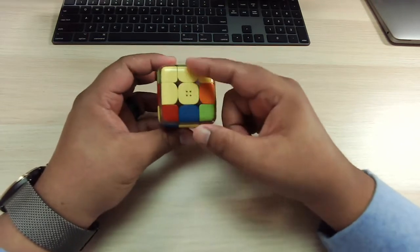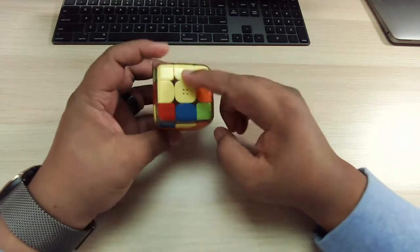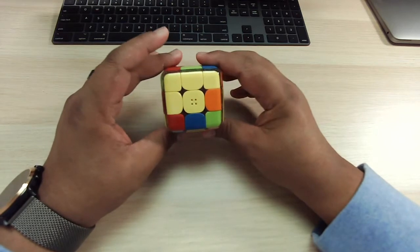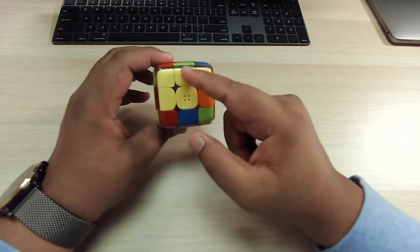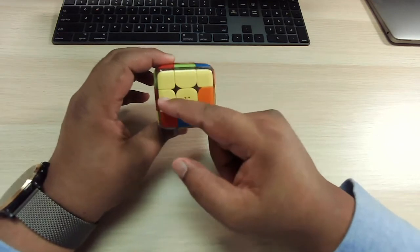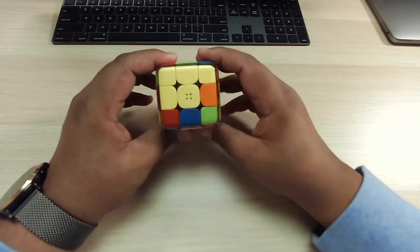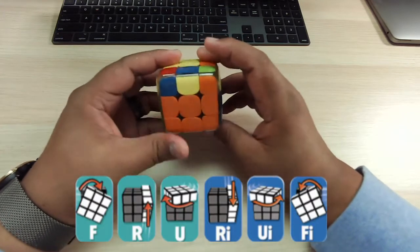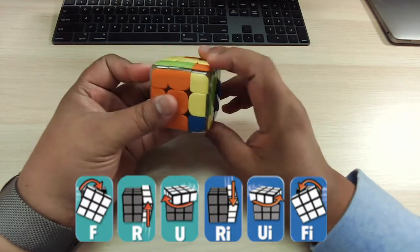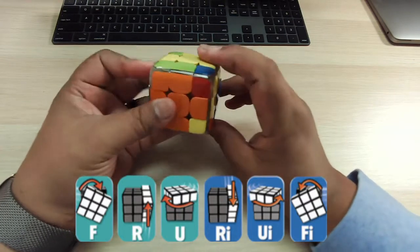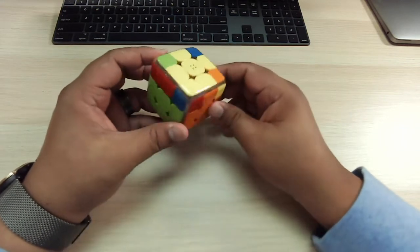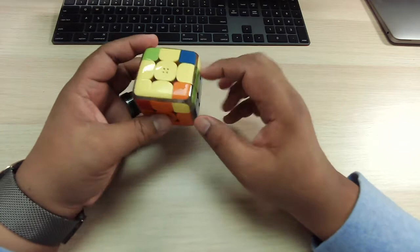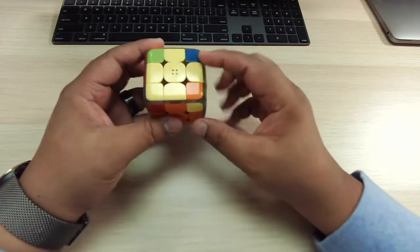So next we have to solve for the yellow cross on top. Okay. So based on the algorithm, the solving handout, I see, I have this pattern here, this we call it like an L pattern, right? So based on that algorithm, based on that, I would do this algorithm once or twice. It's just the same algorithm once or twice. And that's what we have here. I did it twice. Now it gives me the yellow cross on top.